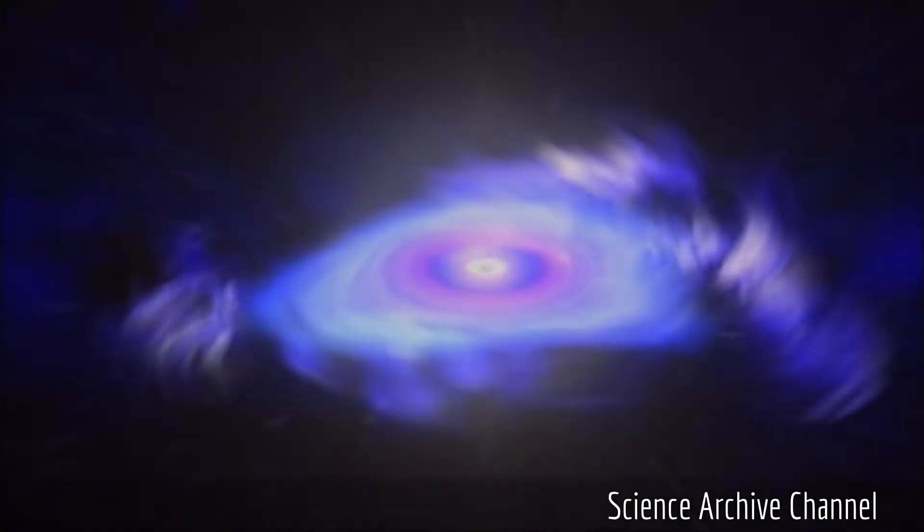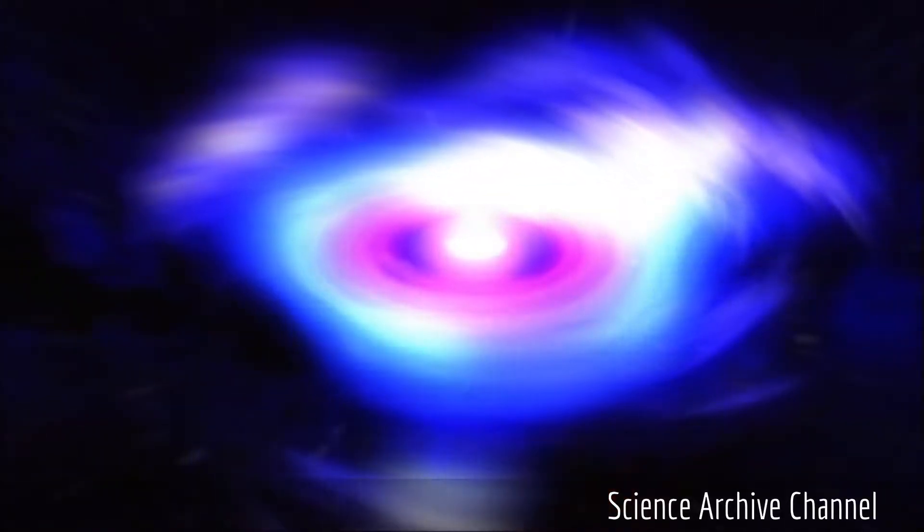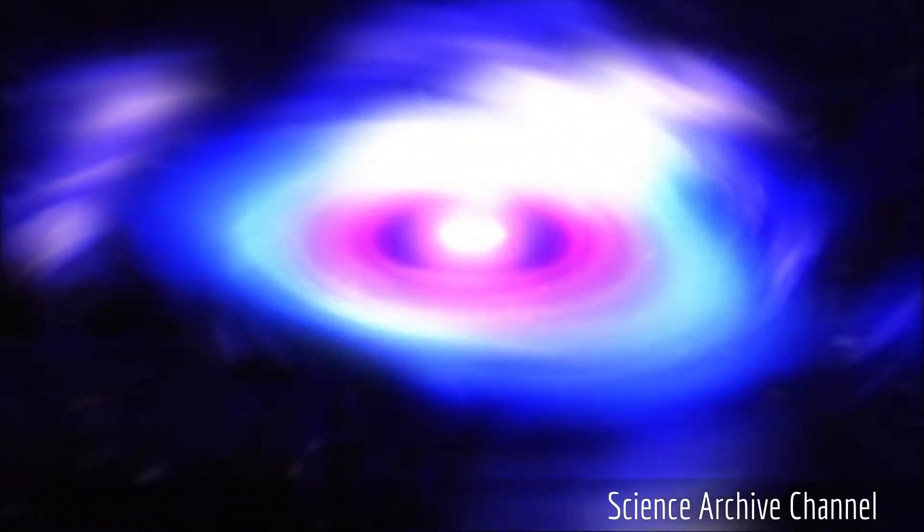The supernova sends out explosive amounts of energy, so anything in its vicinity will get obliterated. Then the remnants of the explosion fall into a newly formed black hole.